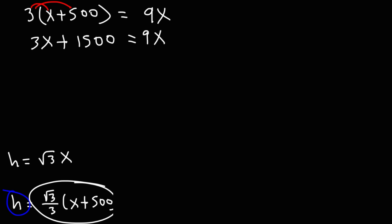And now to get x by itself, we need to subtract both sides by 3x. And so we get 1,500 is equal to 9x minus 3x. 9 minus 3 is 6. Now to separate the 6 from the x, since they're multiplied, we need to perform the opposite operation. We need to divide.